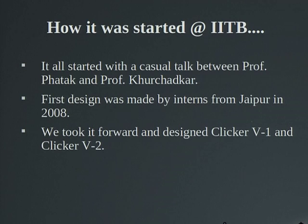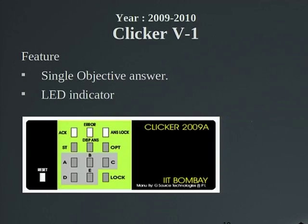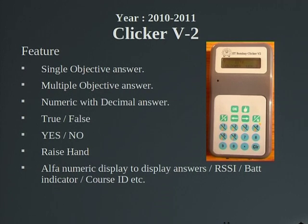It started almost in 2008 at IIT Bombay. We released clicker version one and version two. The initial version one had only options A, B, C, D. This was the clicker that most people at remote centers have used. We then came up with the second version, which had a two-line display, enabling multiple answers, numeric with decimals, true/false, yes/no, and raise-hand features. The student can see on the display the question number, which option they are pressing, and whether the answer was received.